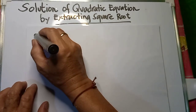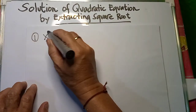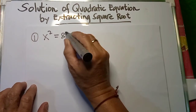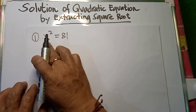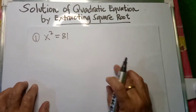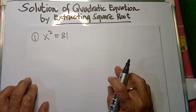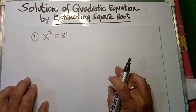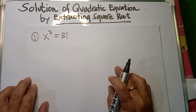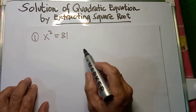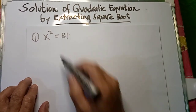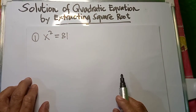So we have here example number 1. Suppose we have x squared is equal to 81. In solving for x using extracting square root, remind you that extracting square roots involves isolating the square and then applying the square root property in order to solve the equation.